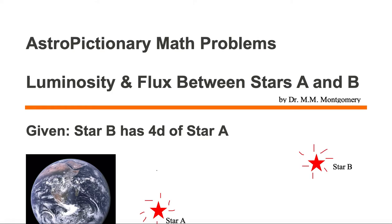In this astro-pictionary math problem, we want to calculate luminosity and flux between stars A and B, where Star B has four times the distance of Star A.